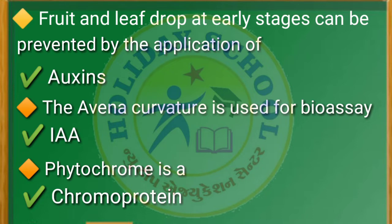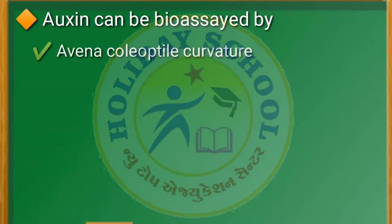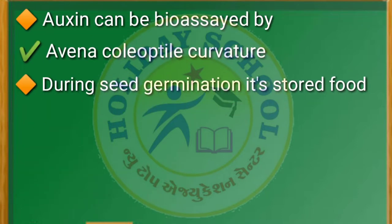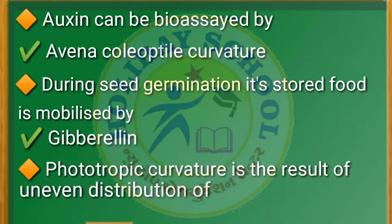Next question: phytochrome is a — the answer is chromoprotein. Next question: auxin can be bioassayed by the — the answer is avena coleoptile curvature test.